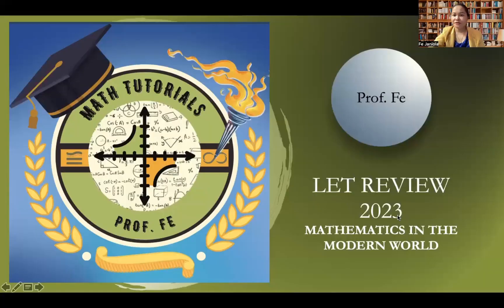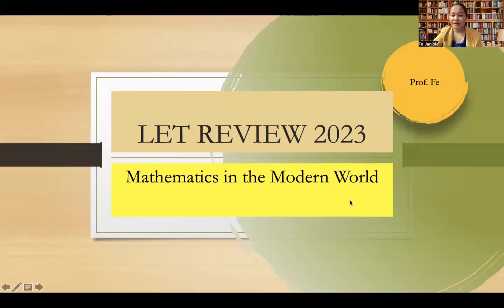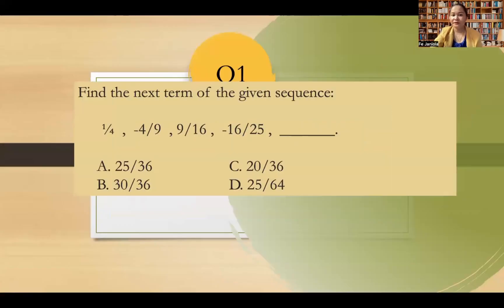We will continue our review. This is a LET review 2023 — Mathematics in the Modern World, under the new curriculum of the General Mathematics. Question number one: find the next term of the given sequence: 1, 4, -4/9, 9/16, -16/25.